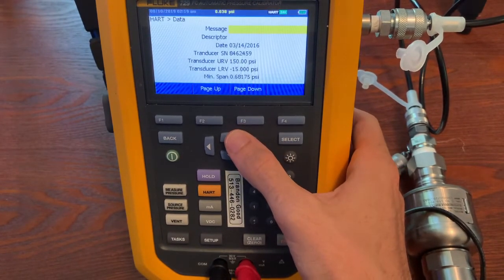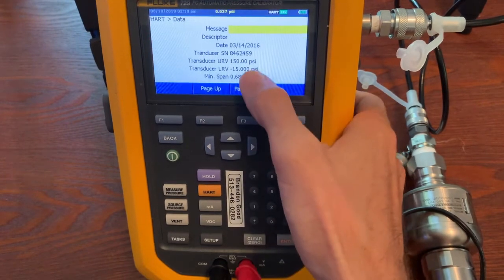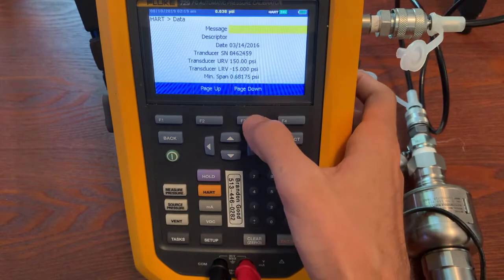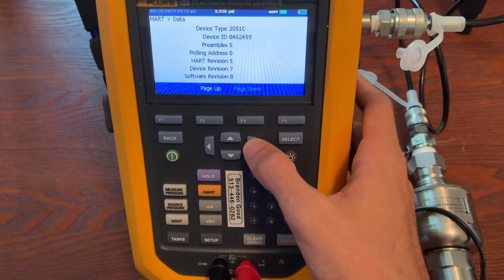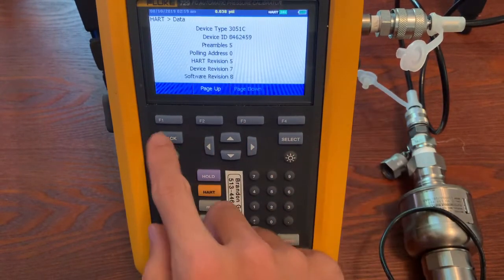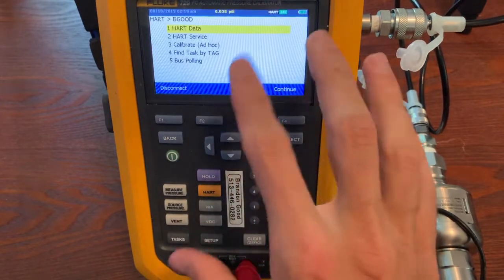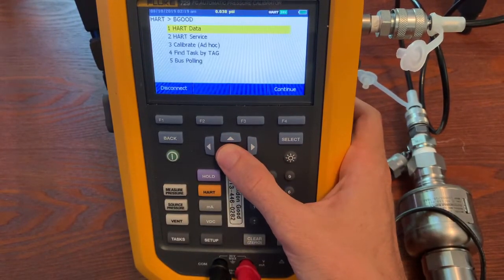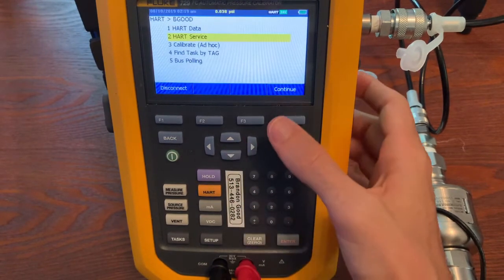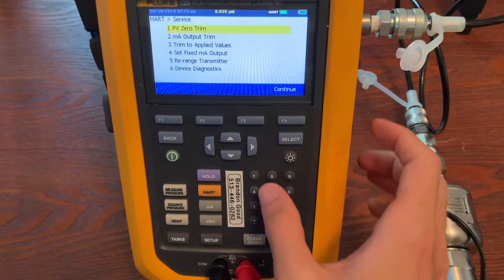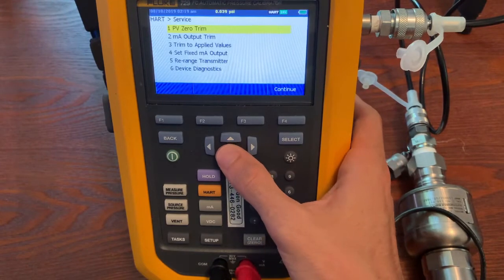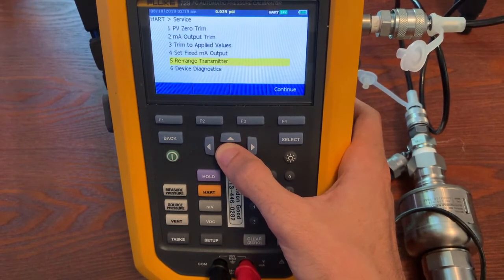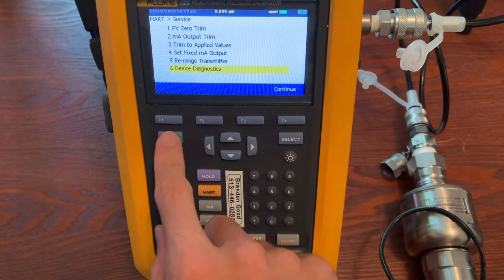So you could adjust the transmitter range if you wanted to in here. It can do some basic changing of the transmitter configuration because it talks basic HART. You can hit service. So if you want to do a PV zero trim, milliamp output trim. Again, I'm not going to read all these, but you can see it. We're just going to hit back.